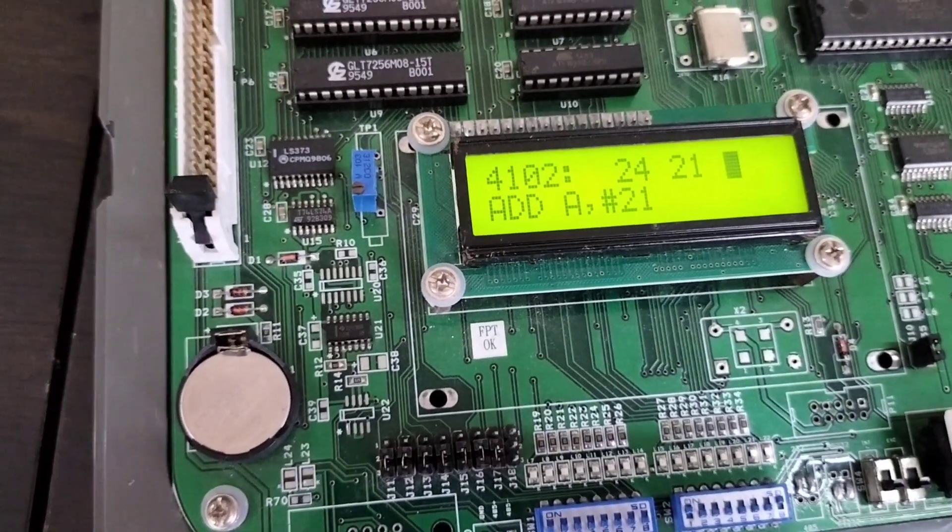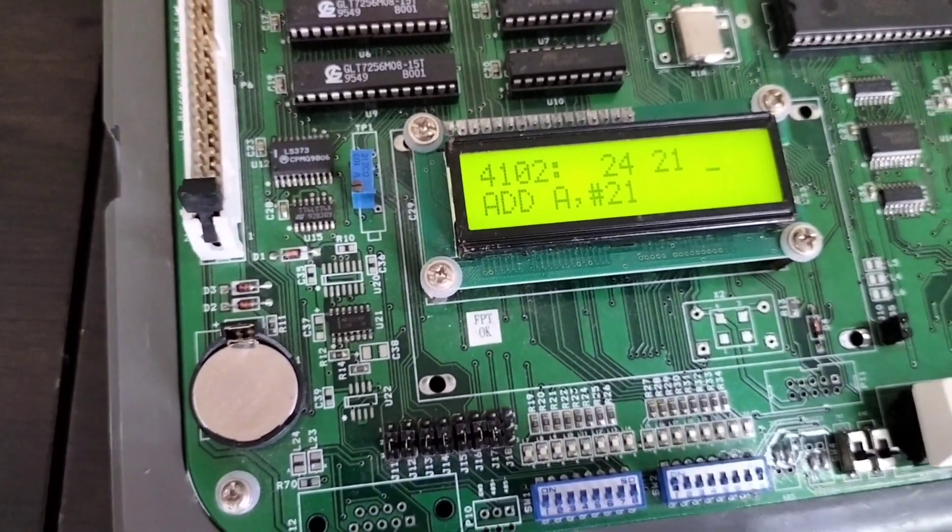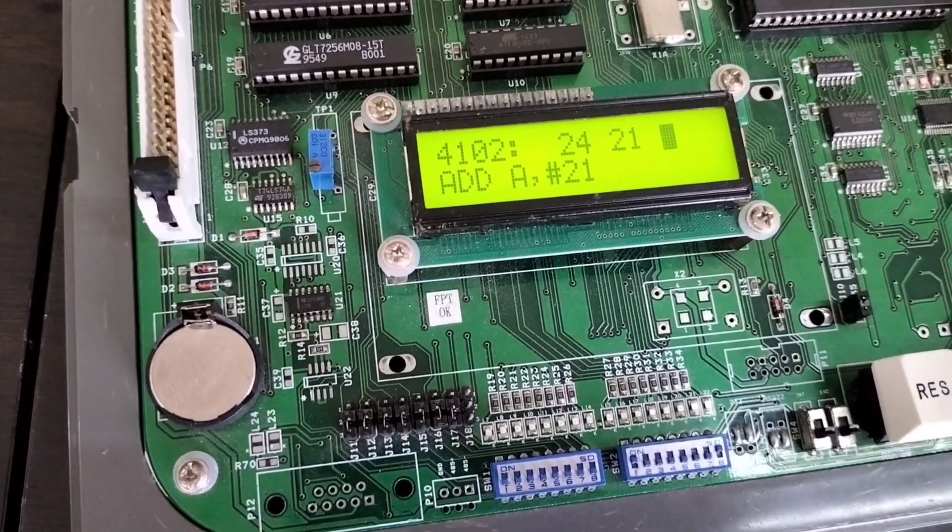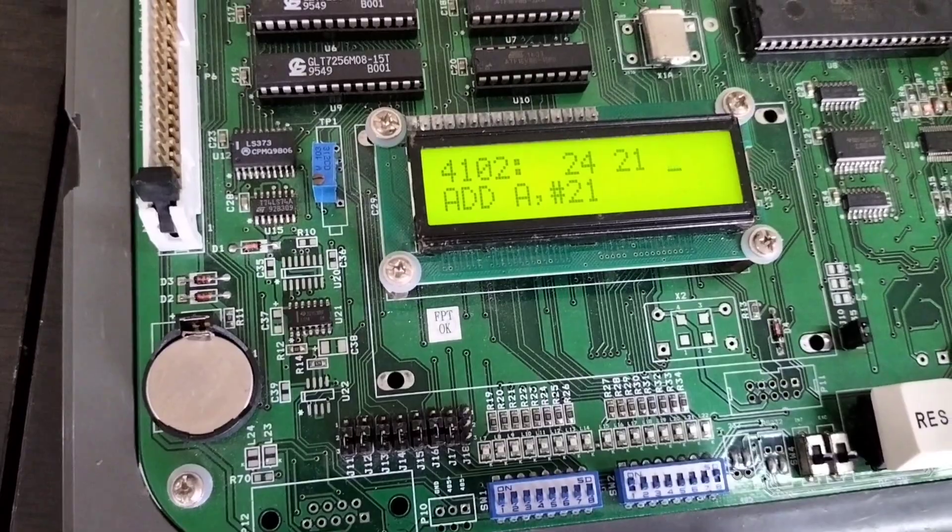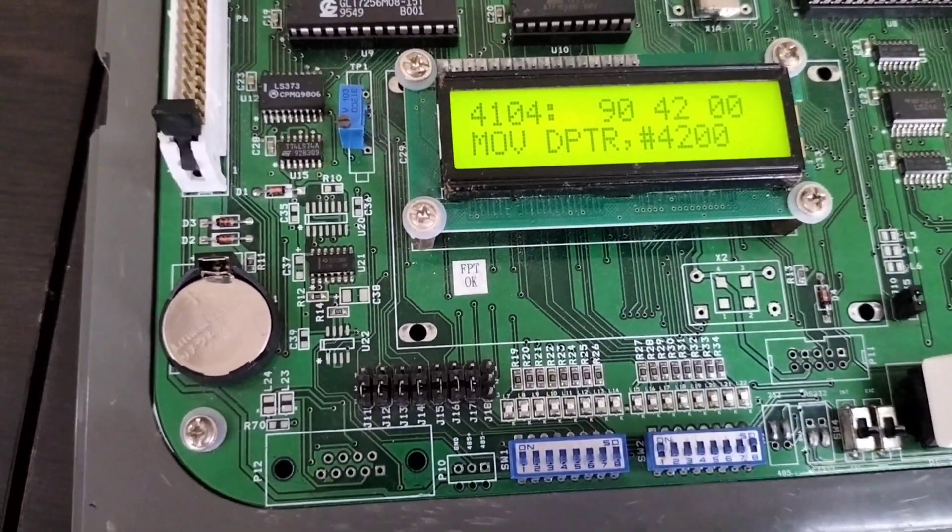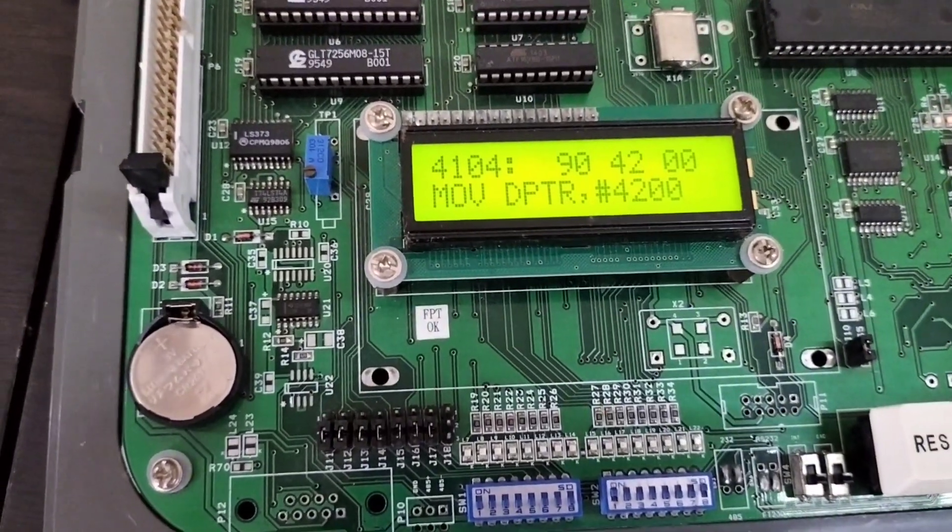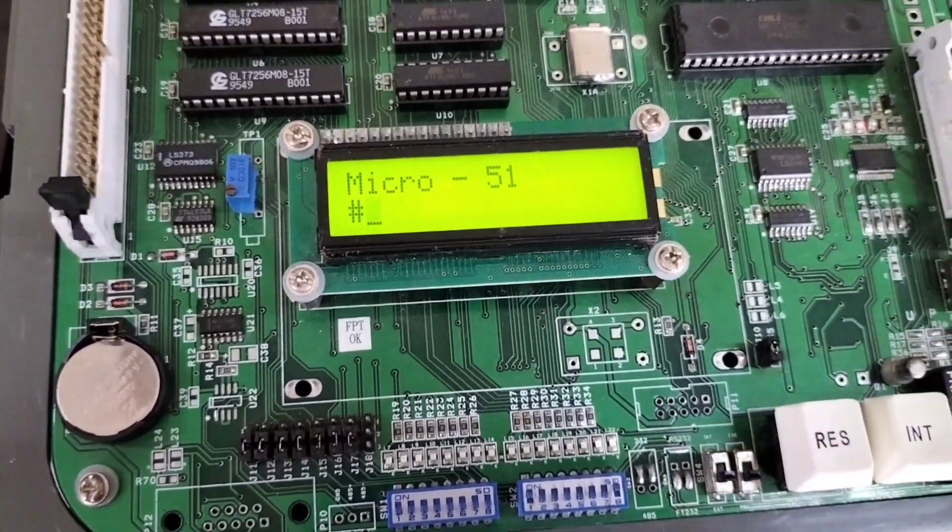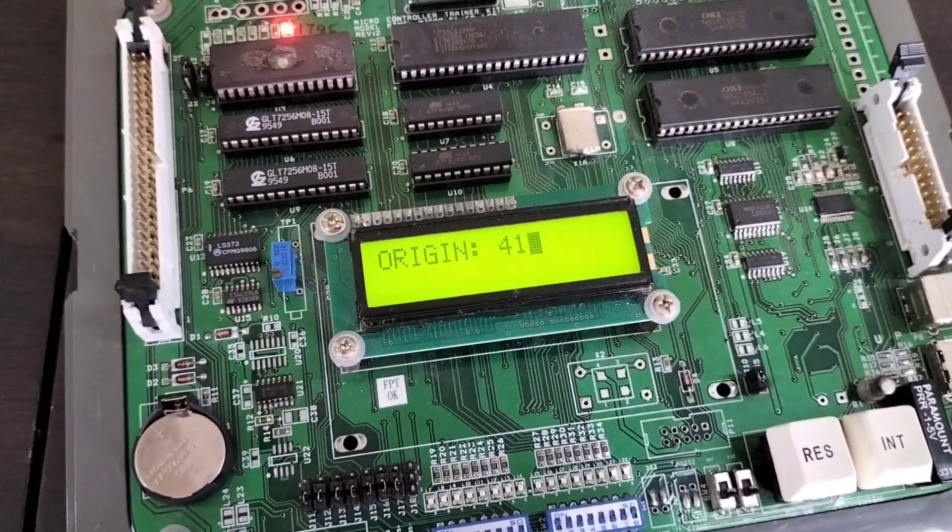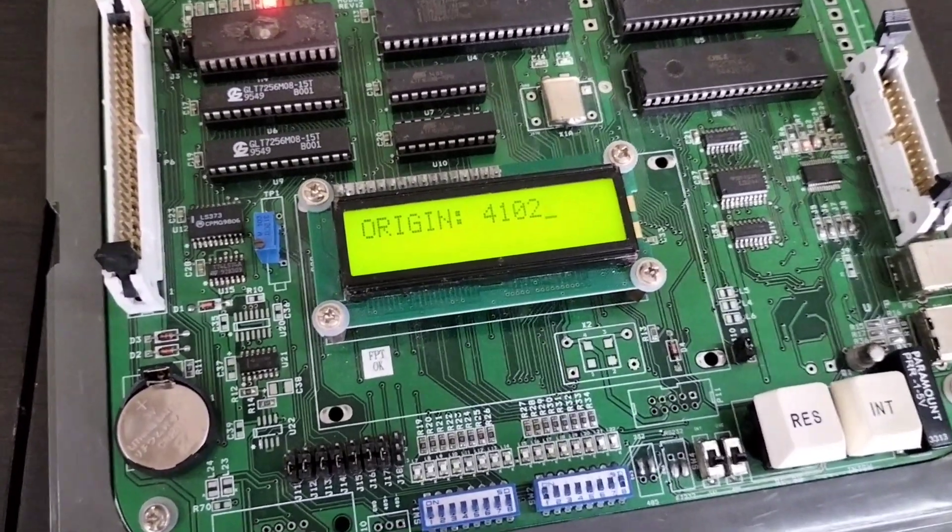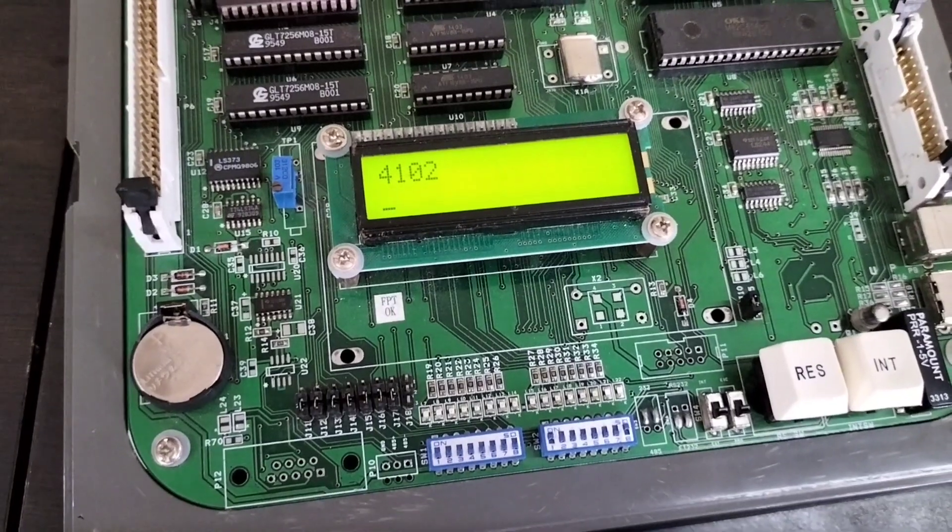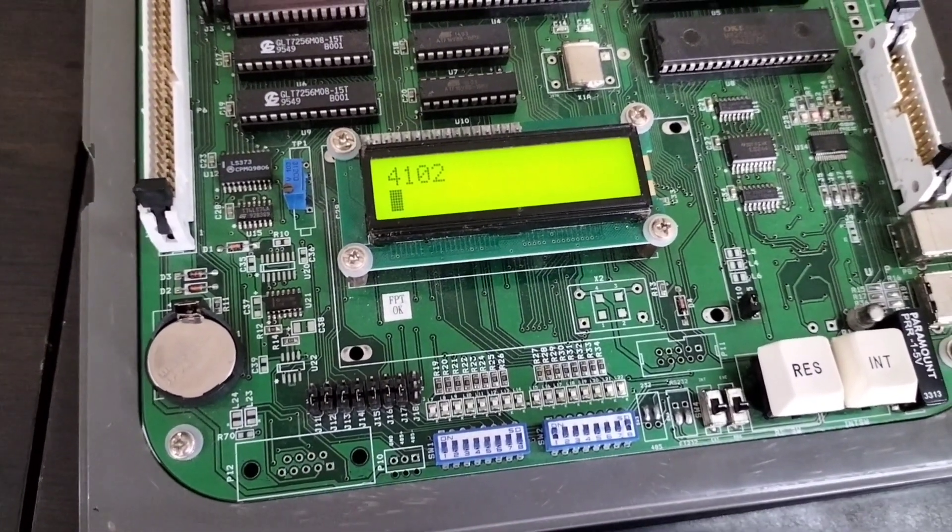Now this instruction only we are going to change to SUBB A, 21. What is the address? 4102. So 4102 address only we are going to change. Next instruction address is 4104. With this knowledge we can reset the kit now. We need to give A 4102, because only at that address we have that instruction.